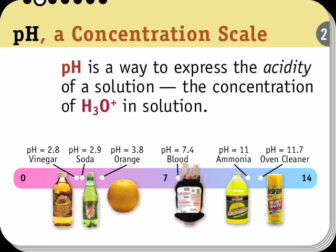The pH scale extends from about zero to seven to about fourteen. Acids are at the low end of the scale. Vinegar has a pH of about 2.8, and so does soda. Orange has a pH of about 3.8.